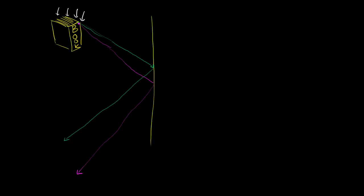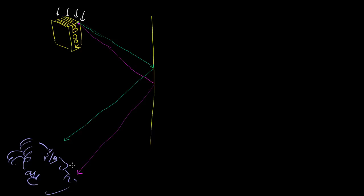Now let's think about what an observer — someone who has their eyeball right over here — will actually see. Let me draw their eyebrows so you get the general idea. All of reality is really just a big simulation going on in our brains. Now this person's eye is going to see these two light rays diverging from some common point. If you were to look straight at the book...